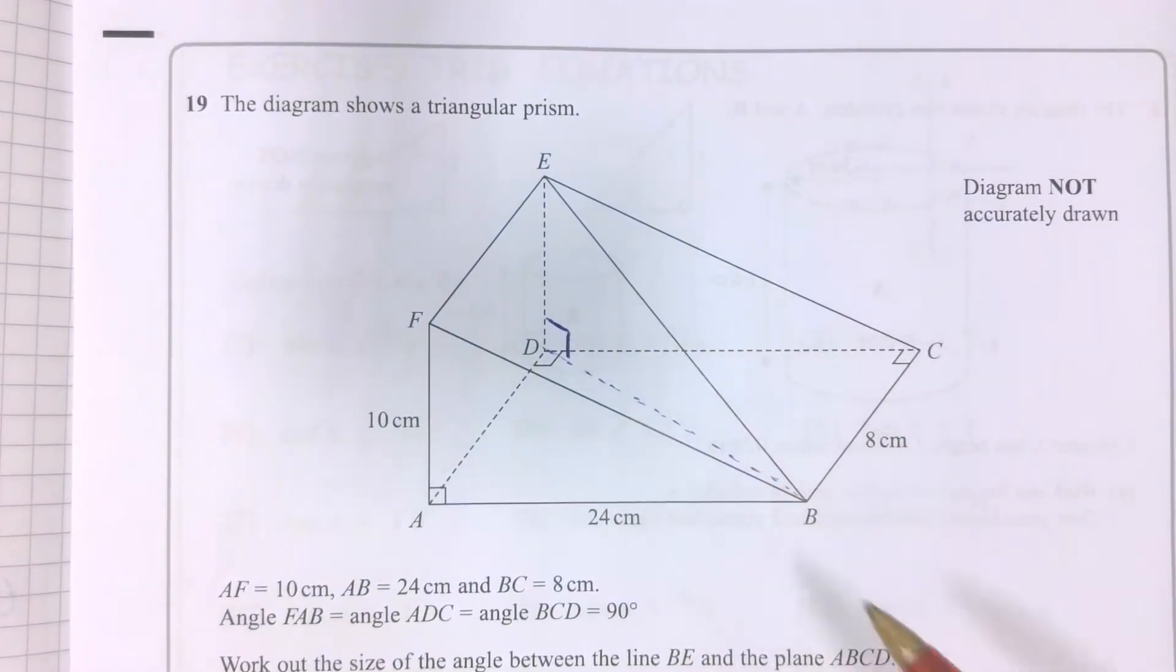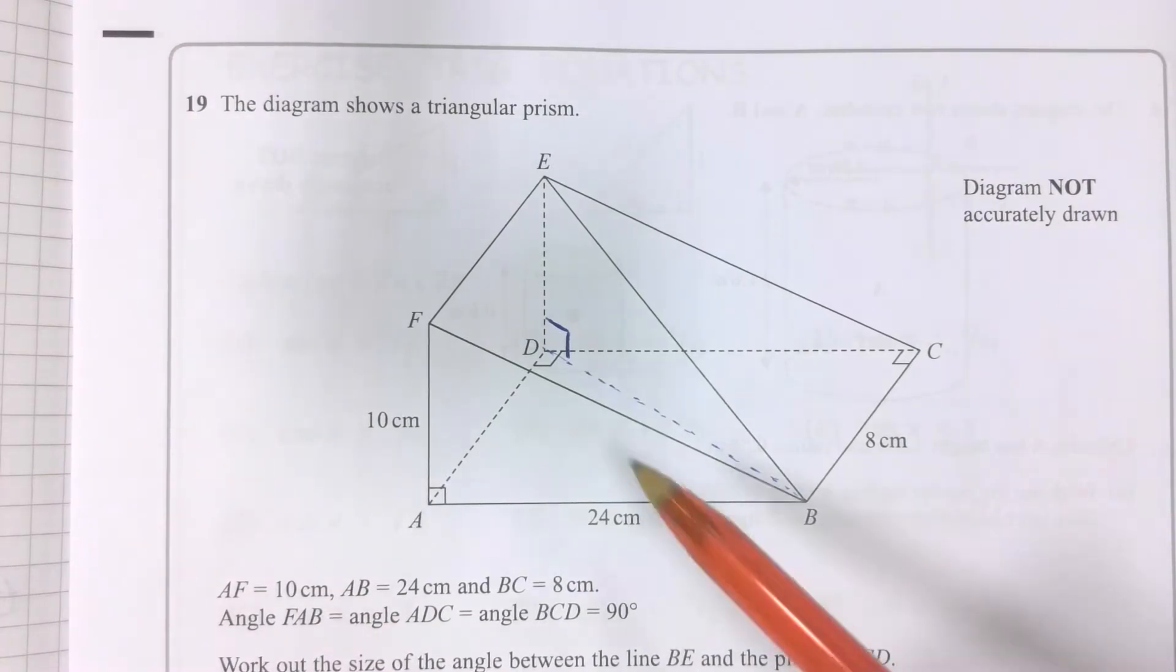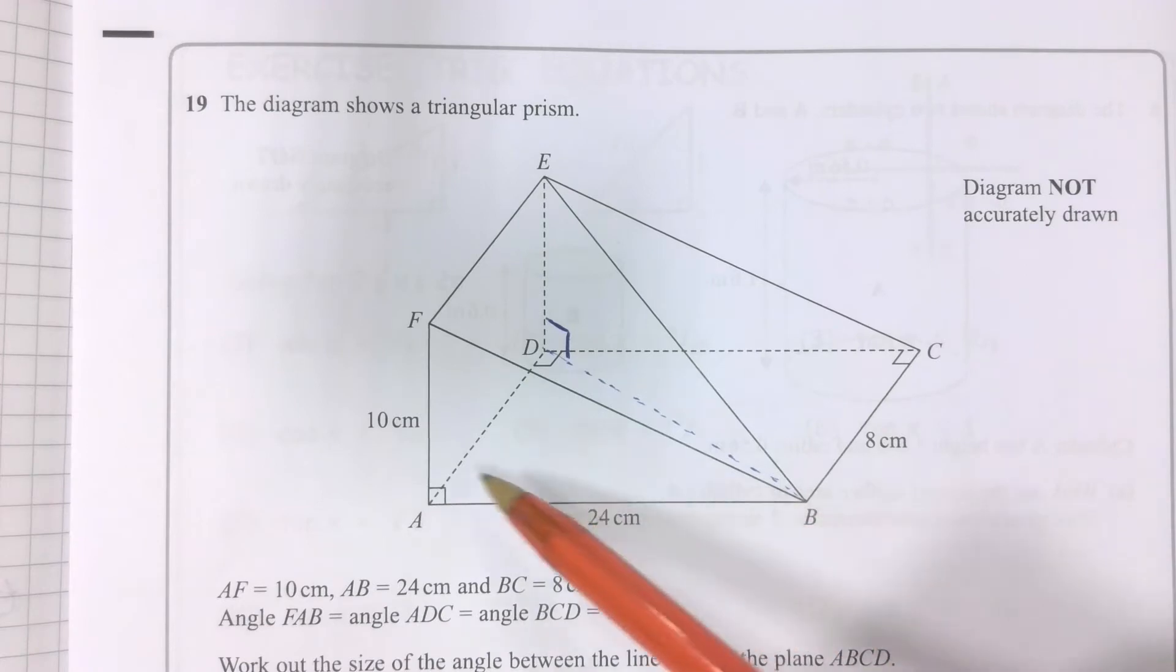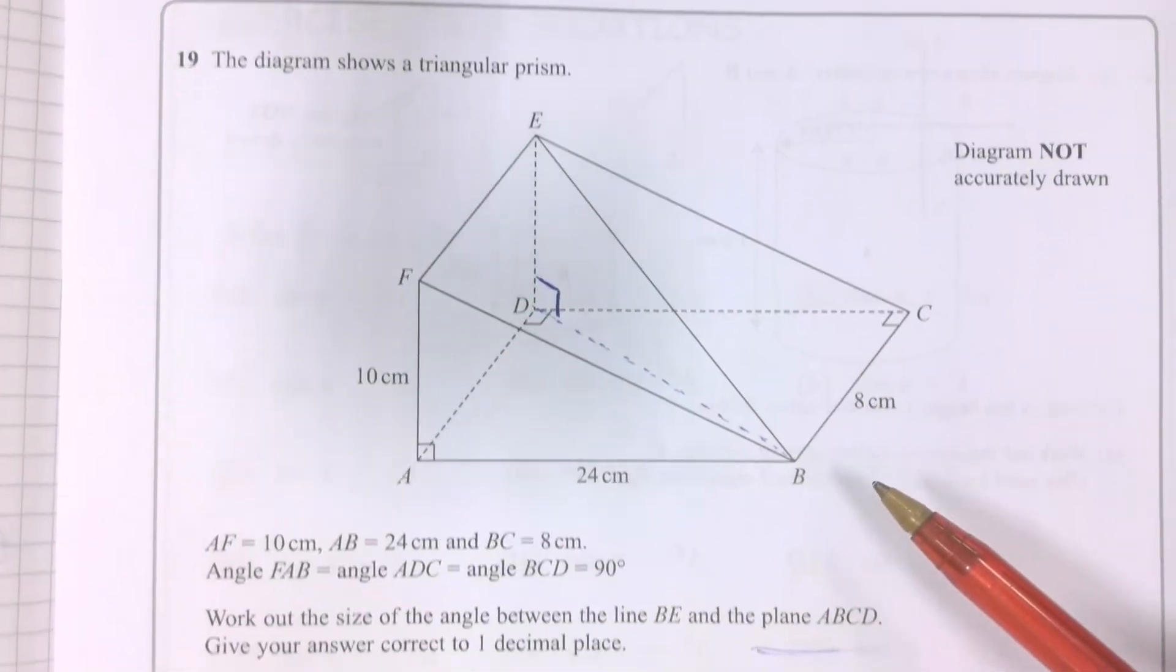But if you had a physical triangular prism in your hand, you could rotate it around, see more easily that this rectangle at the base is effectively the floor. That's what it means, the ground level.